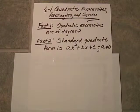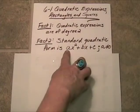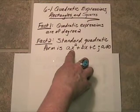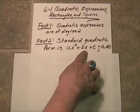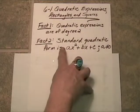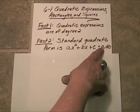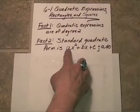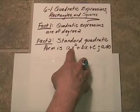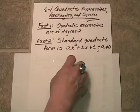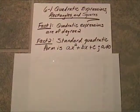Fact two: standard quadratic form looks like this: ax squared plus bx plus c. That's the standard form, as long as a is not equal to zero, because you have to have a term that has a second degree or a power of two.